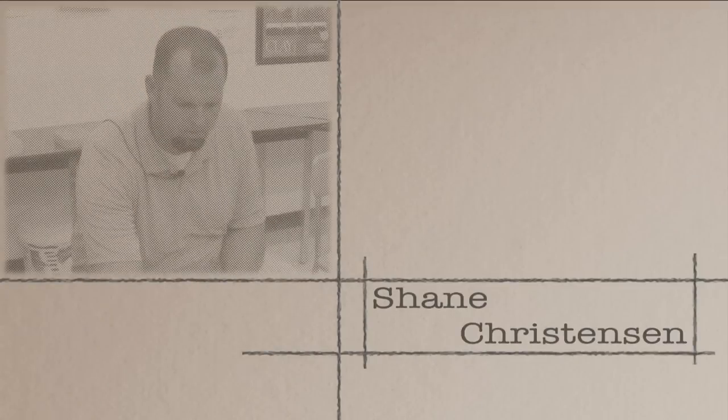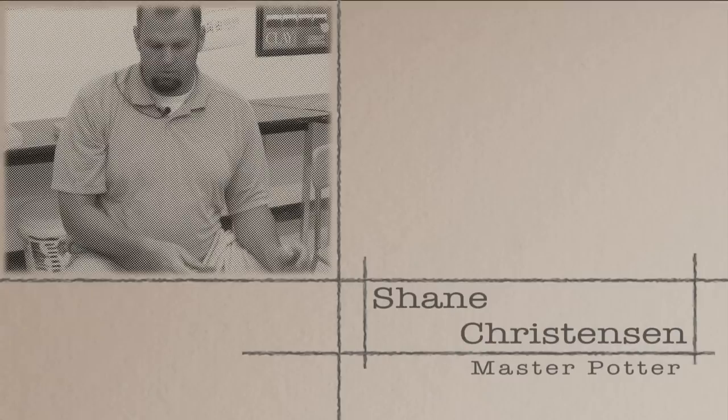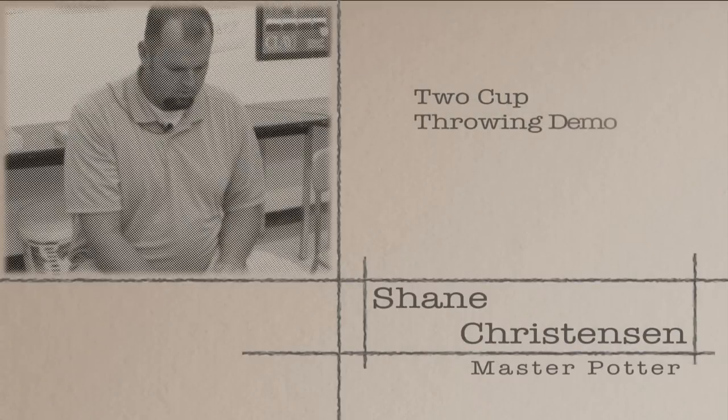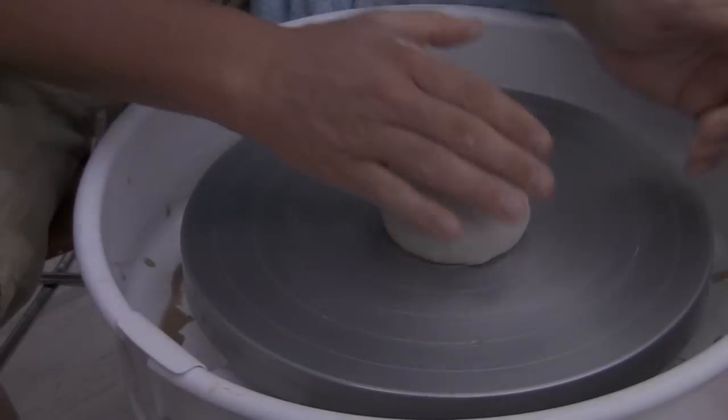Okay, we're ready. We're doing cups and handles, and I'm just going to throw some different cup shapes. This is a real basic cylinder shape, and then I'm going to trim a cup and put some handles on two cups for you so you can see. I'll just throw some shapes to get started.